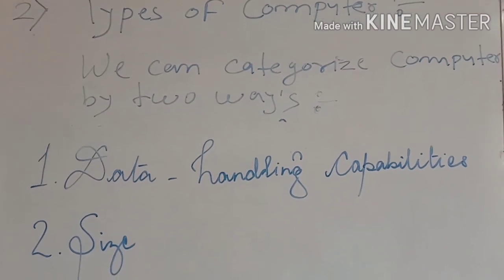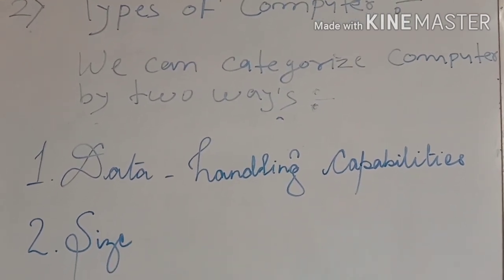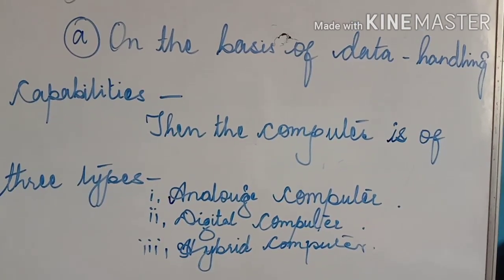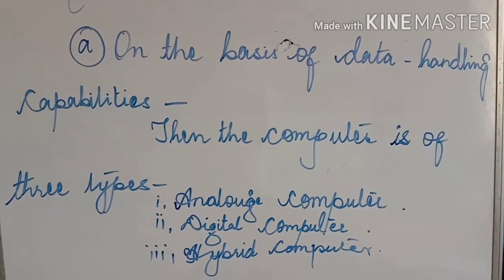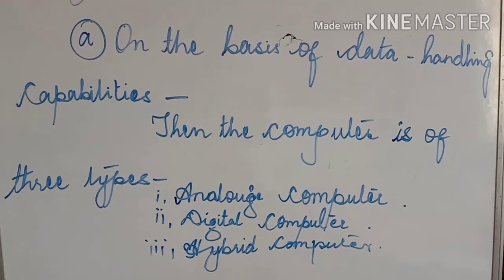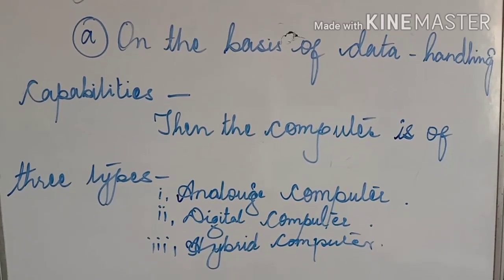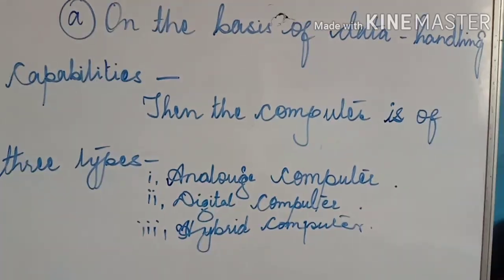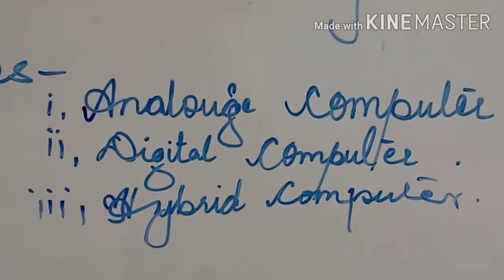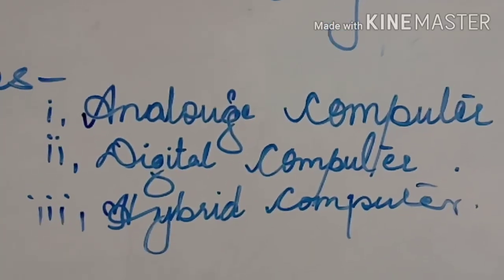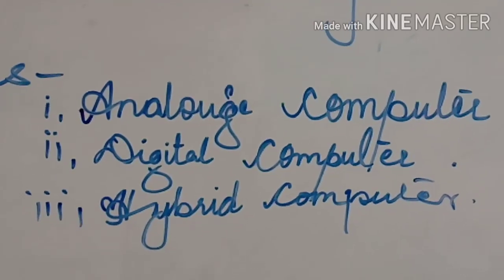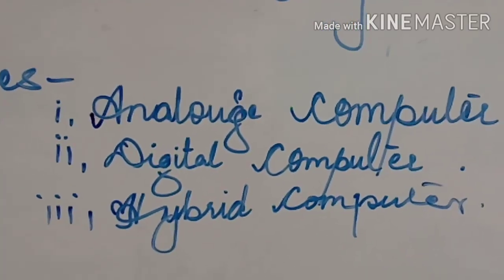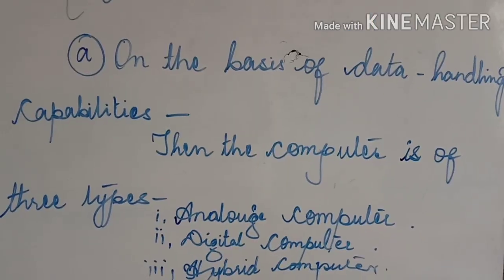Number one: data handling capabilities, and number two: size. On the basis of data handling capabilities, the computer is of three types — number one: analog computer, number two: digital computer, and number three: hybrid computer.